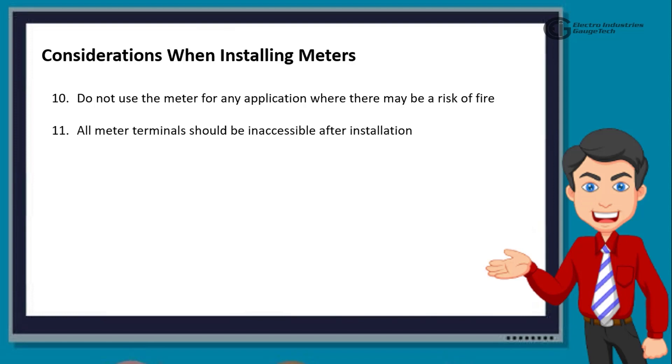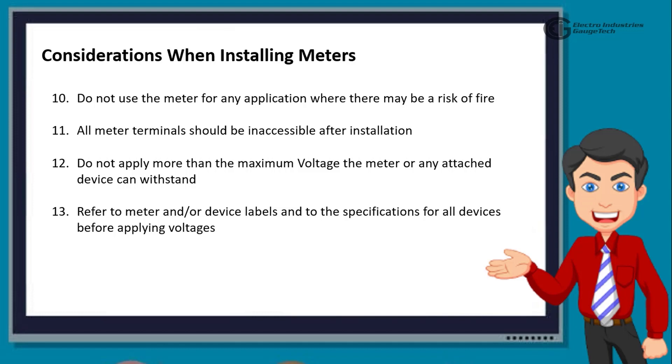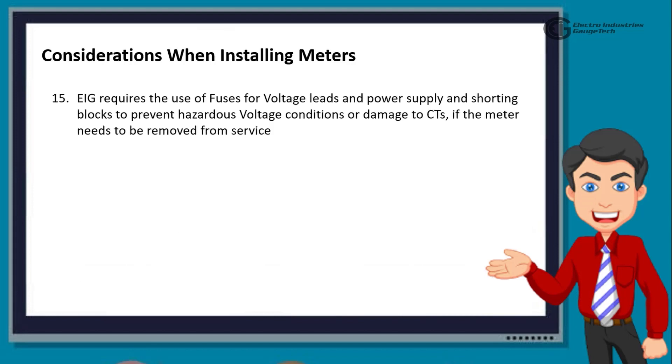All meter terminals should be inaccessible after installation. Do not apply more than the maximum voltage the meter or any attached device can withstand. Refer to meter and/or device labels and to the specifications for all devices before applying voltages. Do not HIPOT dielectric test any outputs, inputs, or communications terminals. EIG requires the use of fuses for voltage leads and power supply and shorting blocks to prevent hazardous voltage conditions or damage to CTs if the meter needs to be removed from service.